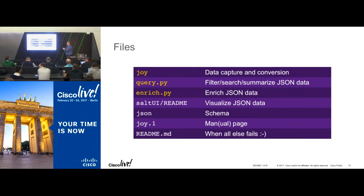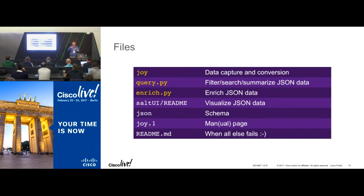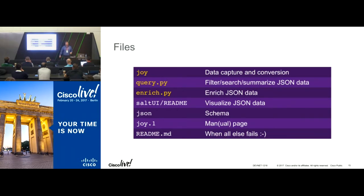Some of the interesting files in that package: Joy is the binary that does the processing of PCAPs or pulling in packets from the interface. Query is the Python script that lets you search different things in the JSON output. Enrich allows you to add enrichment to the data to help your visualization and understanding. The Salt UI — the Bottle Python server — lets you visualize data in a more consumable format instead of looking at JSON. There's a man page: if you install it and do 'man joy' you get the nice man page. And obviously the readme — take a look at that.